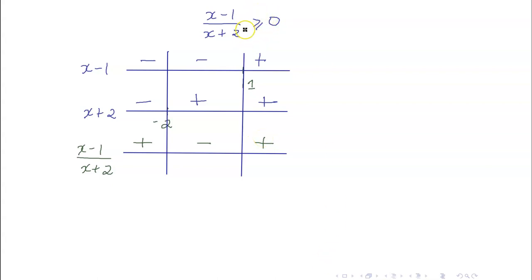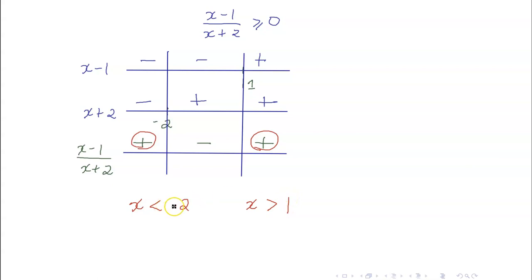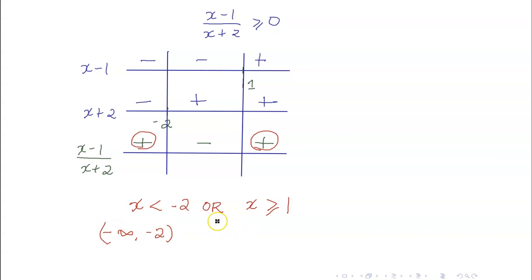We want the expression to be greater than or equal to 0. We get two positive intervals: x less than negative 2, and x greater than 1. Can we include negative 2? No — it is a zero of the denominator. Can we include 1? Yes — it is a zero of the numerator x minus 1, and we are allowed to have 0. So the solution is x less than negative 2 or x greater than or equal to 1. In interval notation: negative infinity to negative 2, union 1 to infinity.